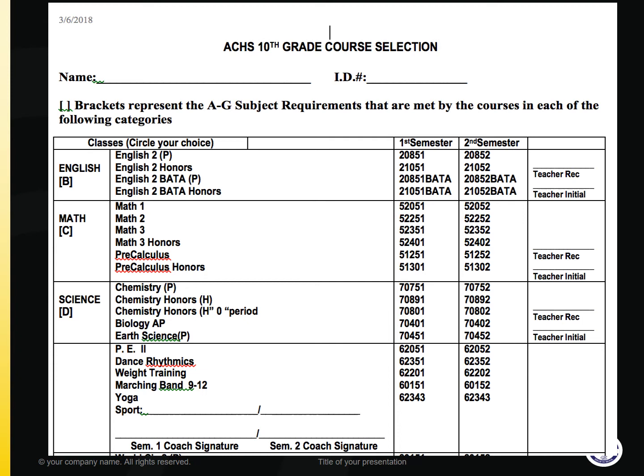The next category is Social Science, and the two options are World Civ College Prep or AP European History. Finally, the last category is Electives, numbered first choice, second choice, and third choice. This is where you would indicate, for example, your world language — you would write Spanish 2 and the course number, or whichever elective you are choosing.